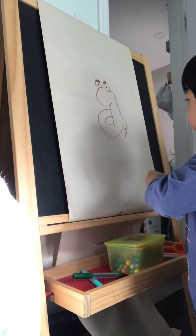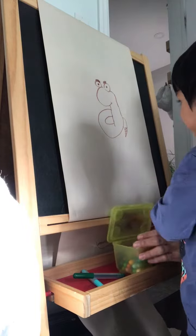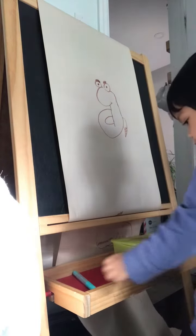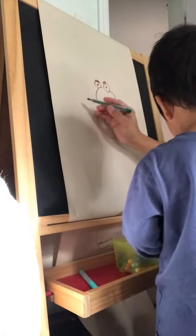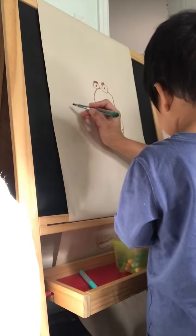Okay Mr. Worm. And then daddy will draw a turtle. What color is the turtle? Red? I read green.